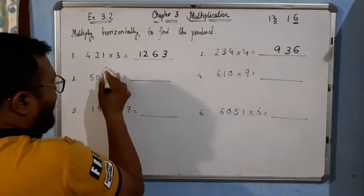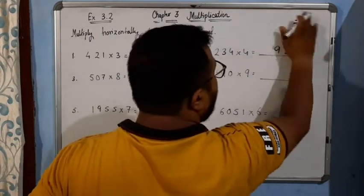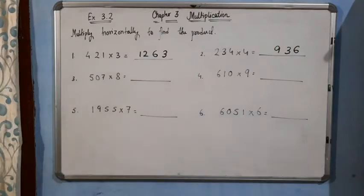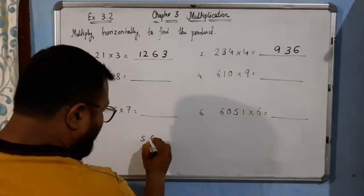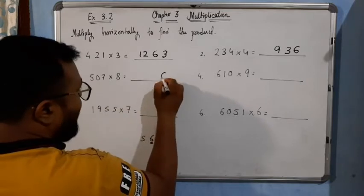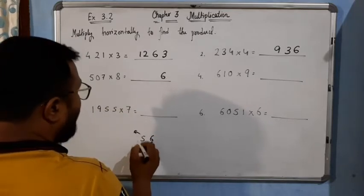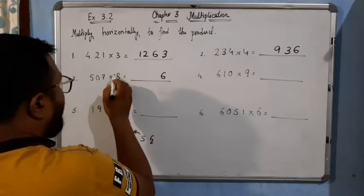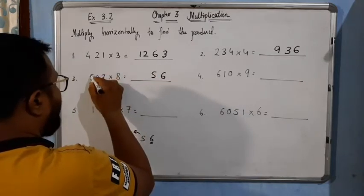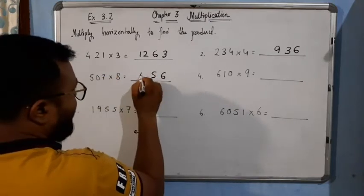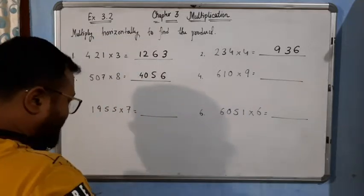Now 8 times 7 is 56. Let me show here. 8 times 7 is 56, 6 we will take, then 5 will be carried over. Now 8 times 8 is 64, plus 5 is 69 — wait, that gives us the next digit. Then 8 times 5 is 40. So we will write 40, 5, 6. Very simple.